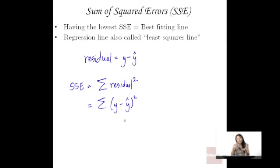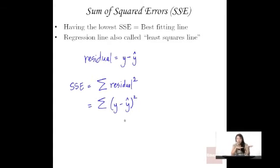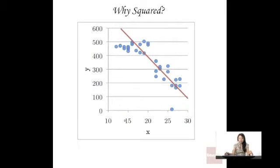There's somewhat of a catch-22 here. We have to have the line before we can figure out whether it has the lowest sum of squared errors. But the question is, how do we find that line? Before we go on, let's talk about why we need to square these residuals.